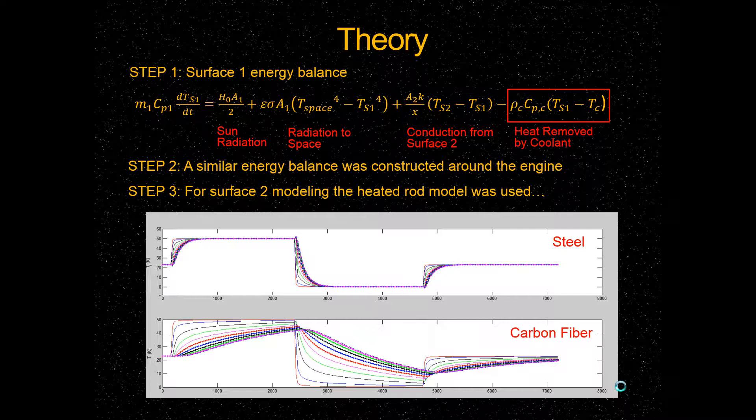This last term is a coolant term, so we have heat removed by the coolant represented by Tc, which is the temperature of the coolant. We used a similar kind of energy balance around the engine, and in order to model the transfer functions between the two surfaces that we had, we used a heated rod model.